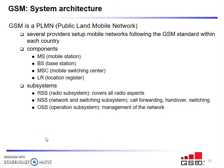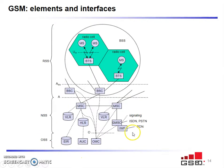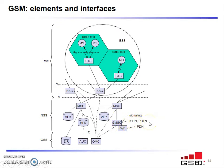Finally we have the operation subsystem which helps in managing the total network. Communication from one network to another network is done through a gateway MSC which communicates to ISDN and PSTN — the gateway to other networks.